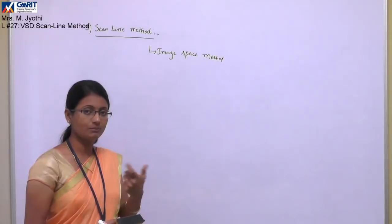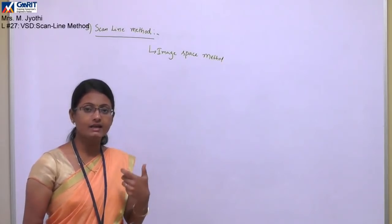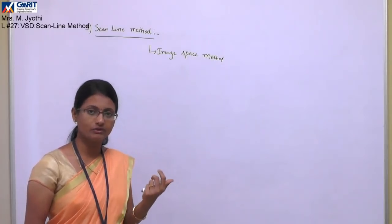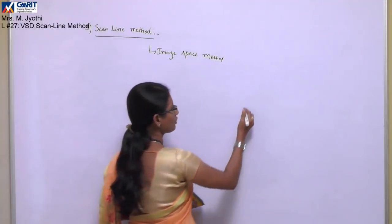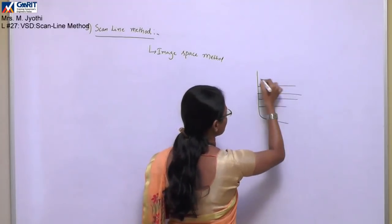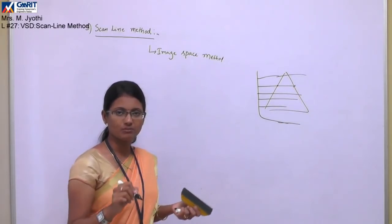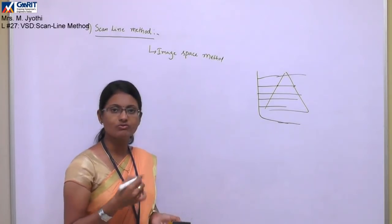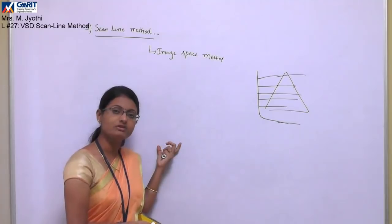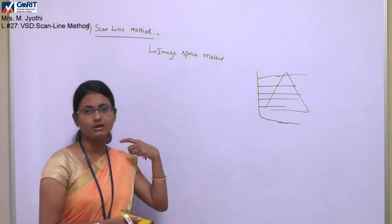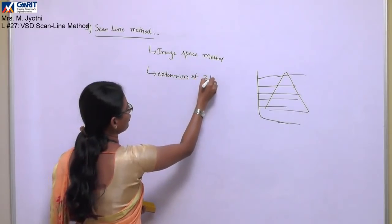I want to remind you of the concept of 2D polygon filling algorithms. While discussing those, we discussed the scan line filling algorithm — if you don't remember, please go through that video. In that method, for an object, we find all the intersecting points of the scan lines, store them in memory, and fill the pixel values between those intersecting points with a specific color. This scan line method for visible surface detection is an extension of that 2D polygon filling algorithm.